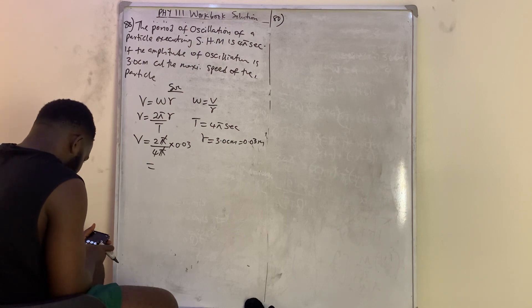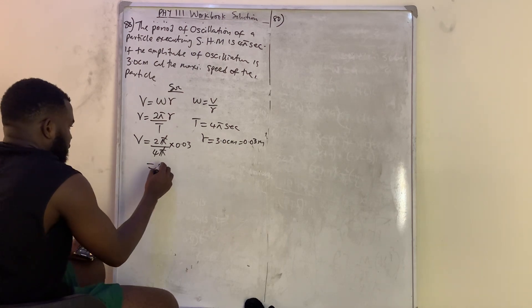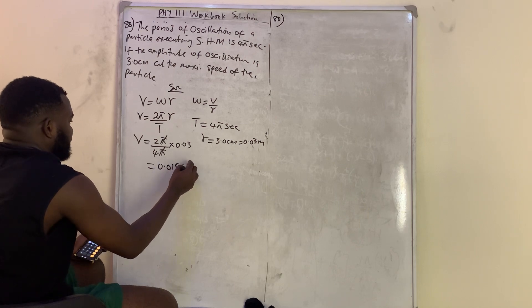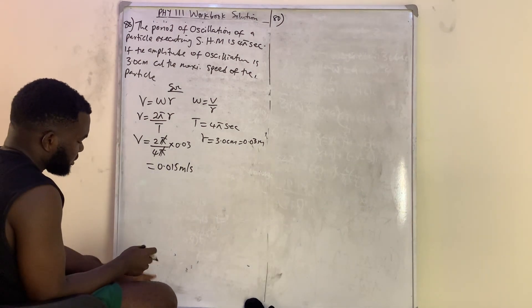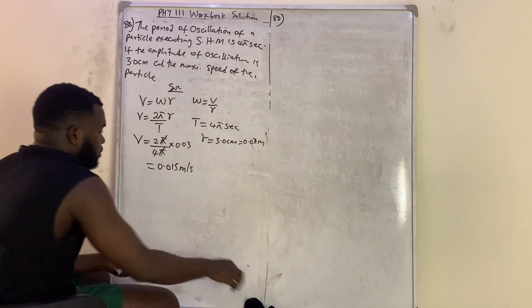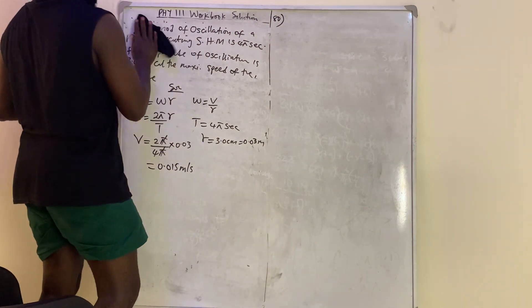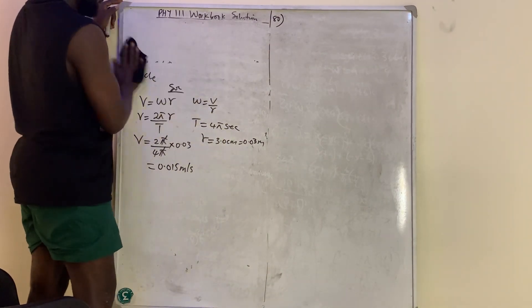0.03 divided by 2 gives 0.015 meters per second. That is the maximum speed. Moving to question number 89.